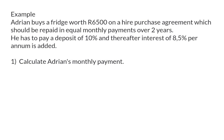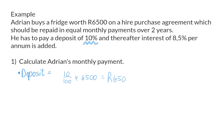We have a few calculations that we need to do before we can determine the monthly payment. Firstly, we need to determine the amount that Adrien needs to pay as a deposit. This deposit will be 10% or 10 over 100 of the R6,500, so he will have to pay a deposit of R650.